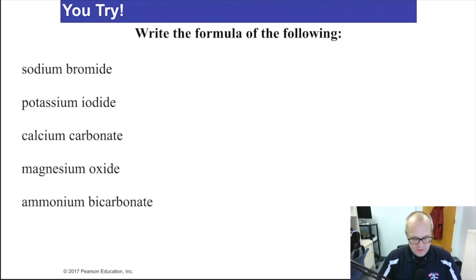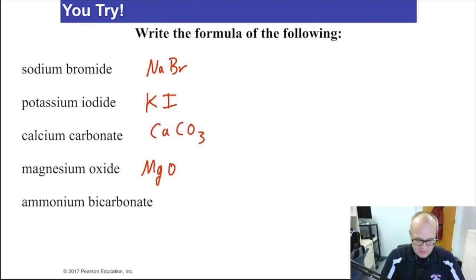All right, you try. Pause the video, take a second, figure these out, and come on back when you're done. Welcome back. Sodium bromide is NaBr. Potassium iodide is KI. Calcium carbonate is CaCO3. Magnesium oxide is MgO. And ammonium bicarbonate is NH4HCO3. Now, I just gave you the answers there. I'm thinking at this point, you know how to do it. If any of these are wrong, go back and review the entire section on naming. Even try looking at your book. Get this stuff right. It's not hard, but you have to understand how to do it. If on the exam, this is the first time you're trying to do this, you are going to have a hard time. This is not something that you're born with. You have to kind of learn it.